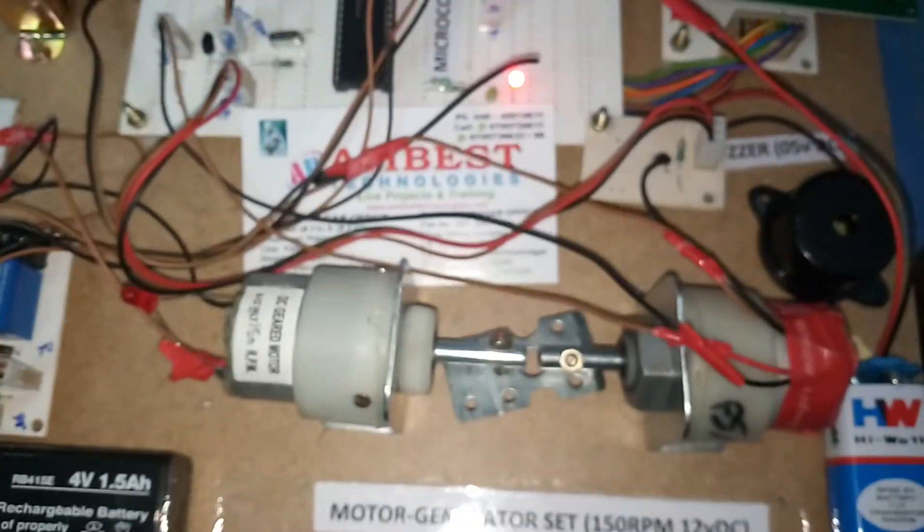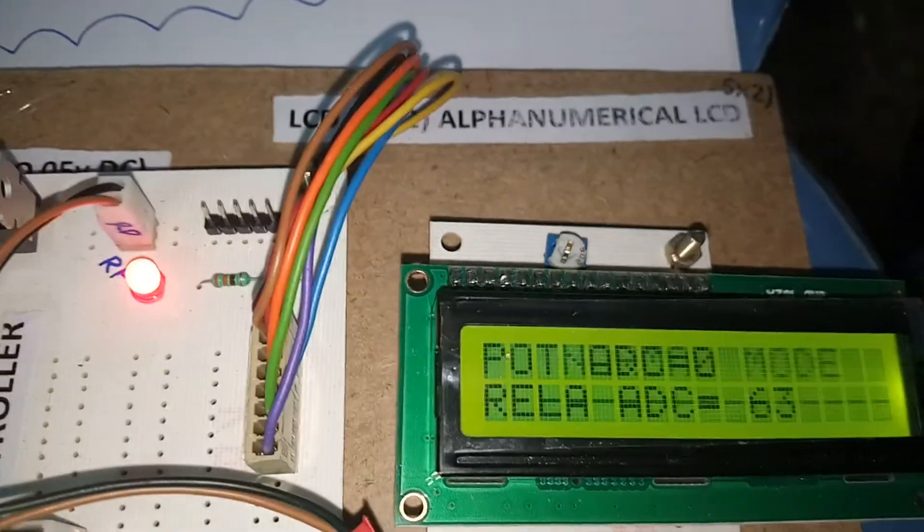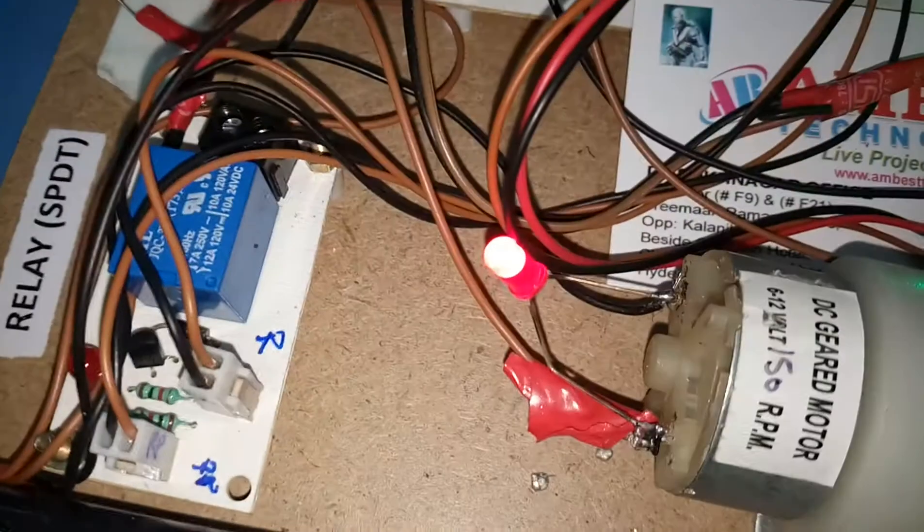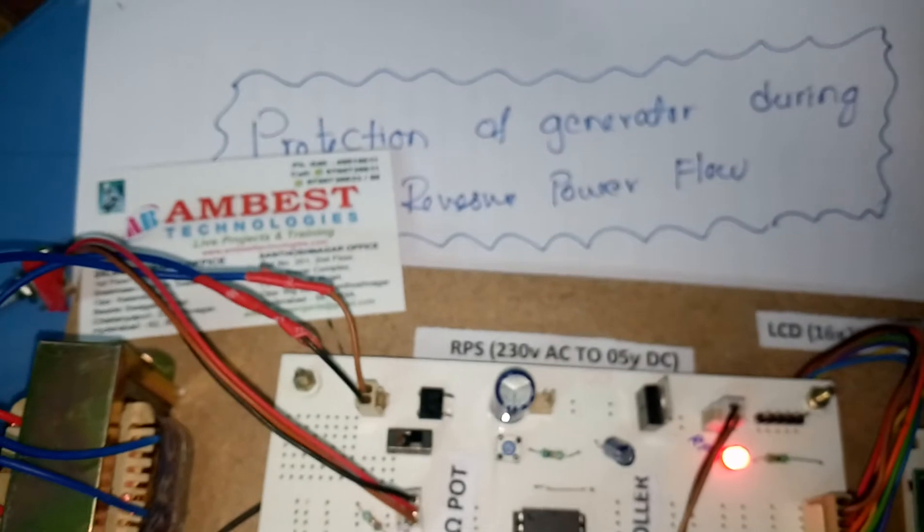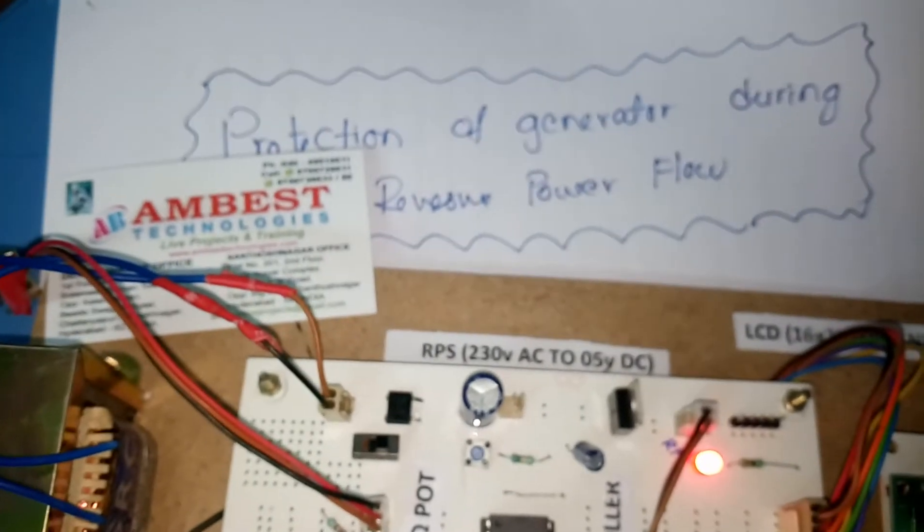If this problem is rectified, it comes back to its original position — normal mode. The dynamo is rotating and power is generating. This is how we can protect the generator during reverse power flow.